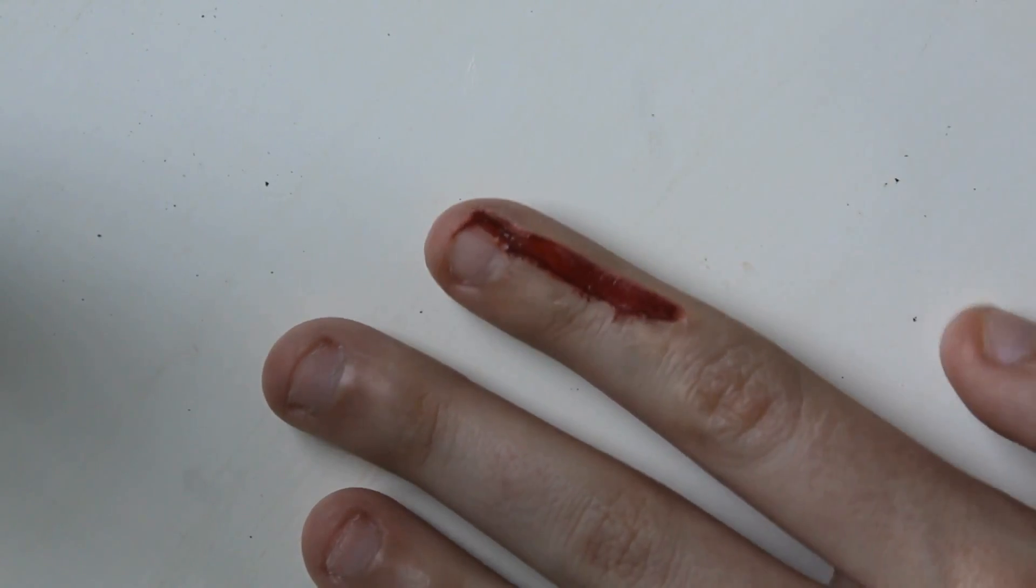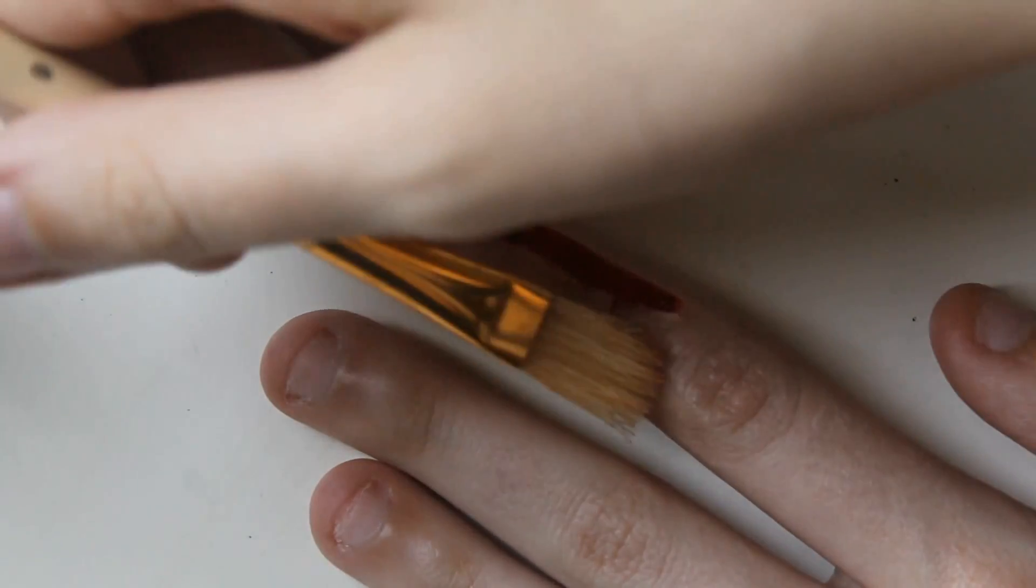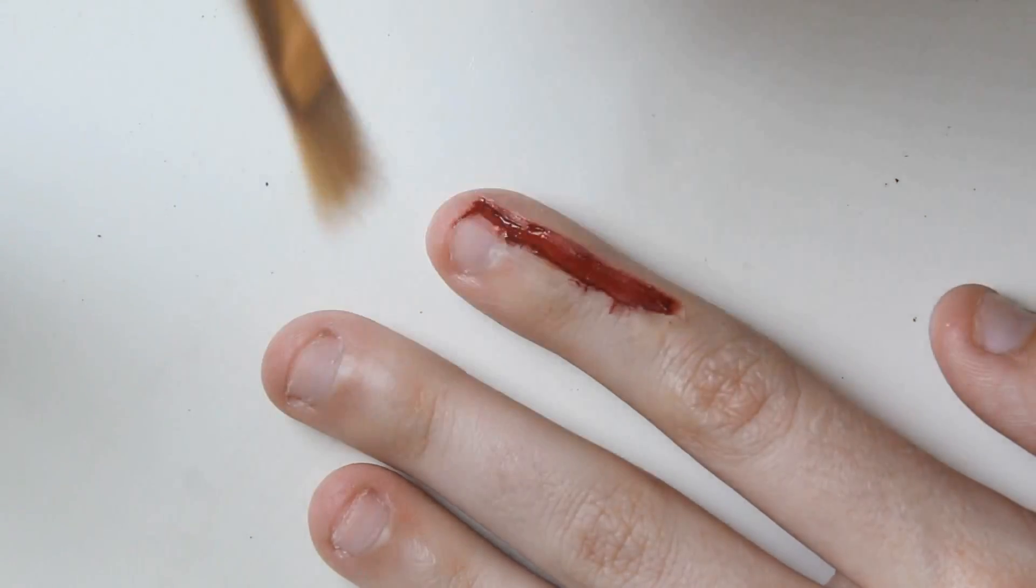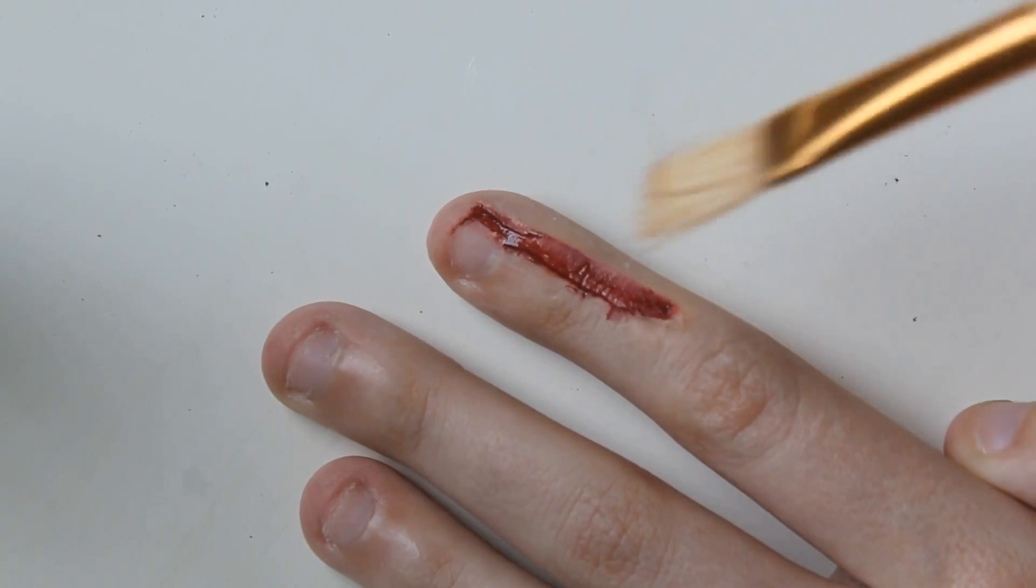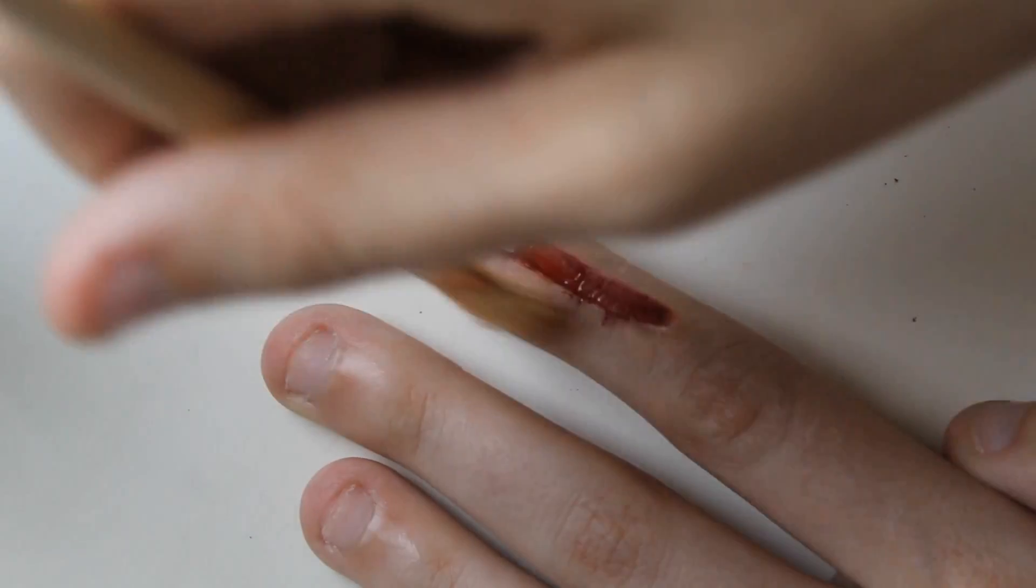The scar wax needed more texture to it. I ran out of stippling sponges, so I took this frayed brush I got from Michaels and used that. I would recommend having stippling sponges on hand to add some skin texture back to the wax.